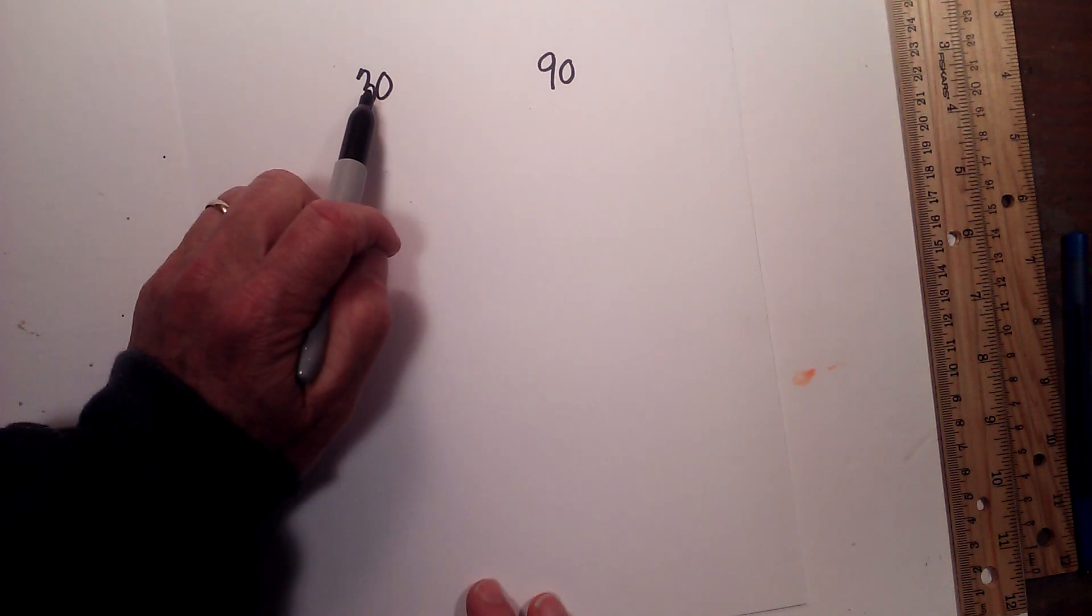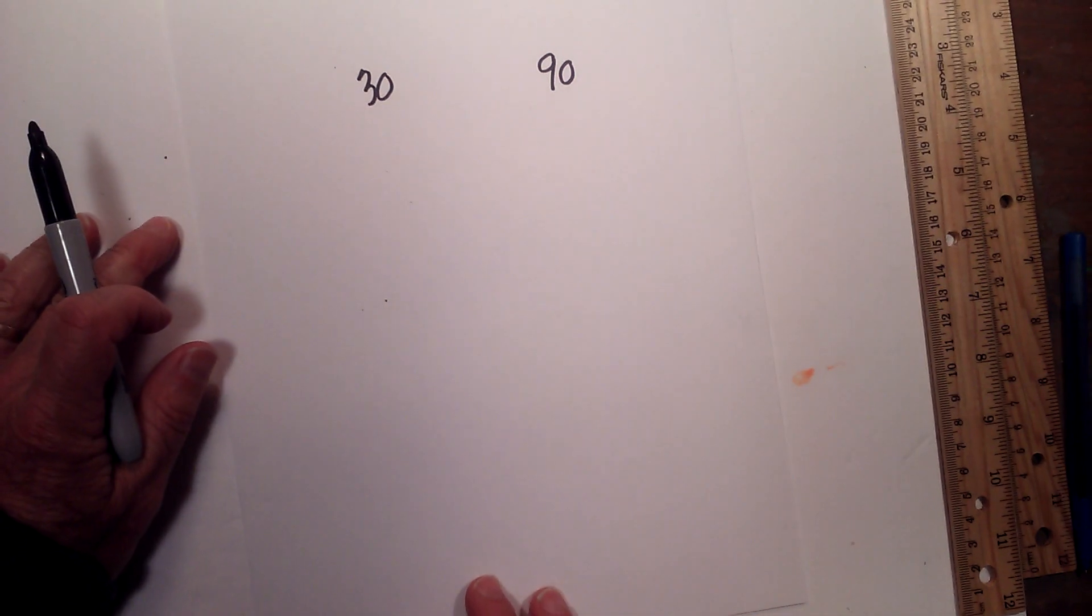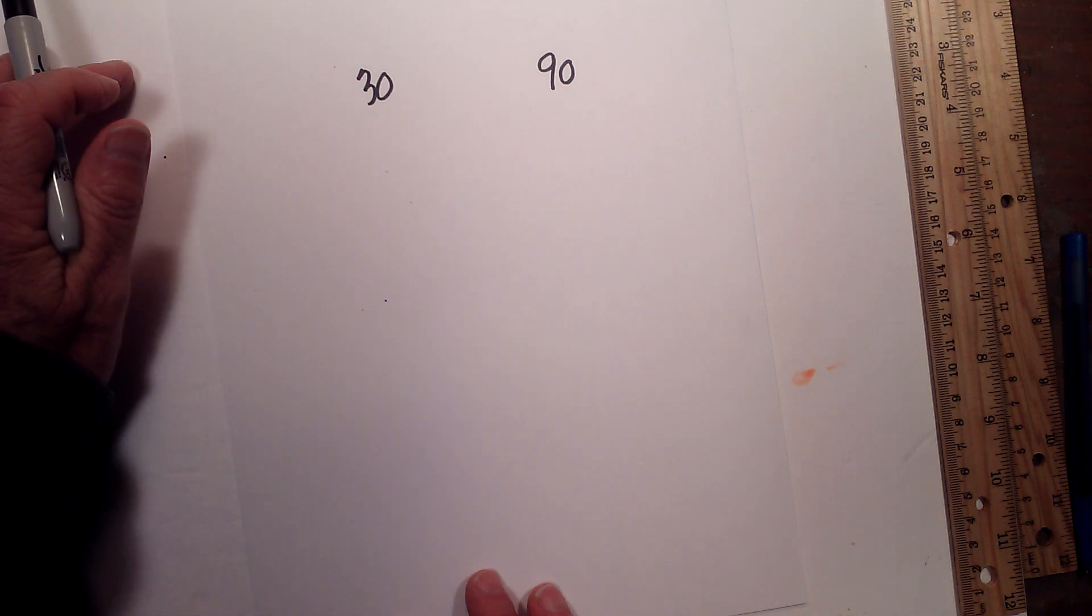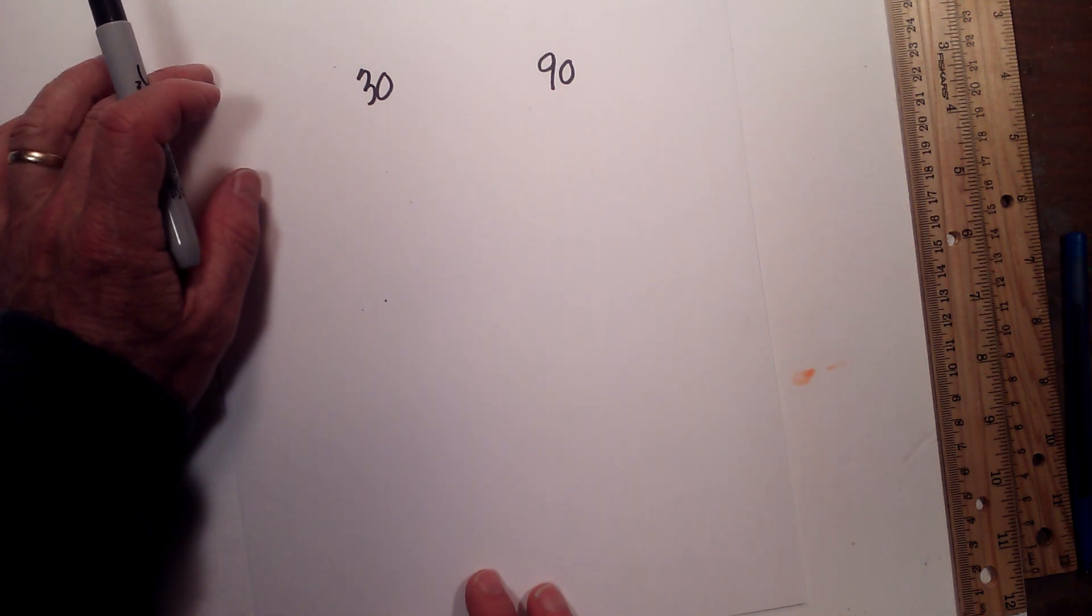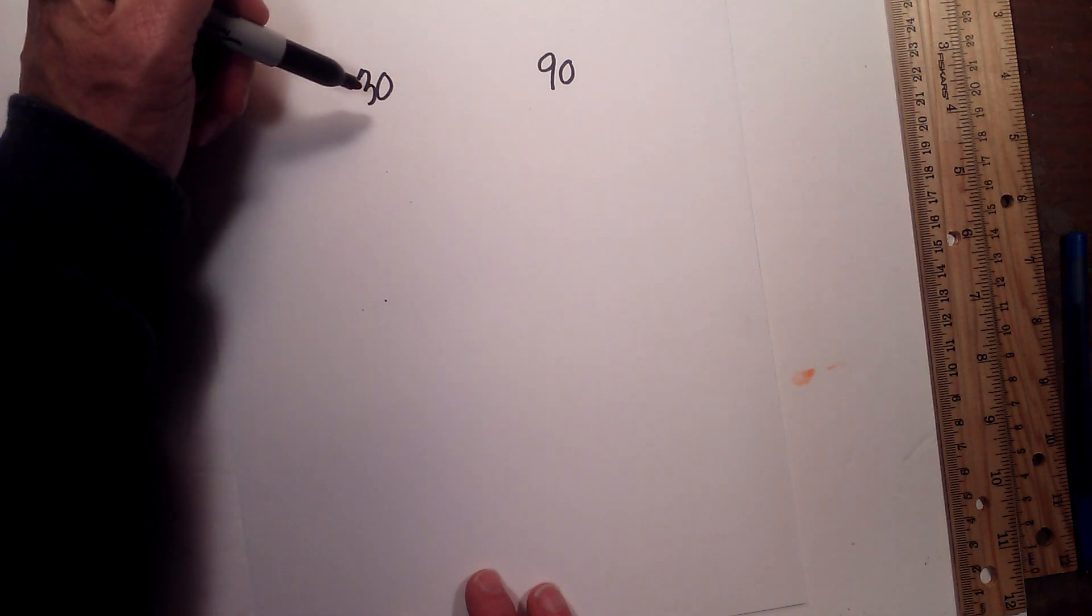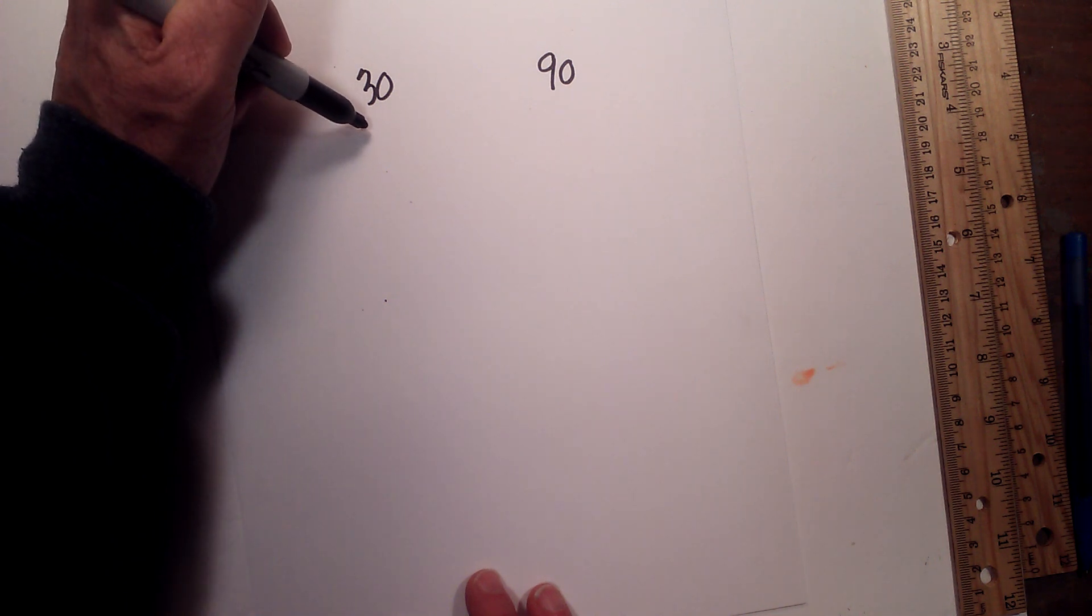Finding the prime factorization of 30 and 90. Prime factorization is finding which prime numbers multiply together to equal the original numbers. I like to use a factor tree, so let's get started.